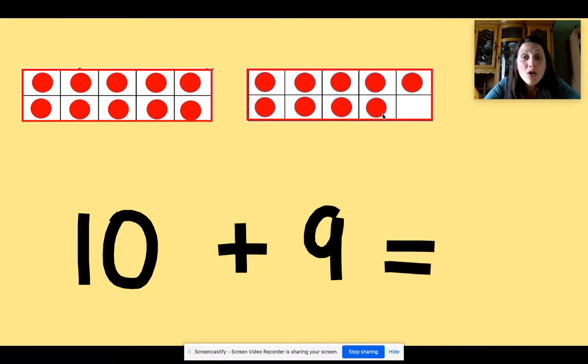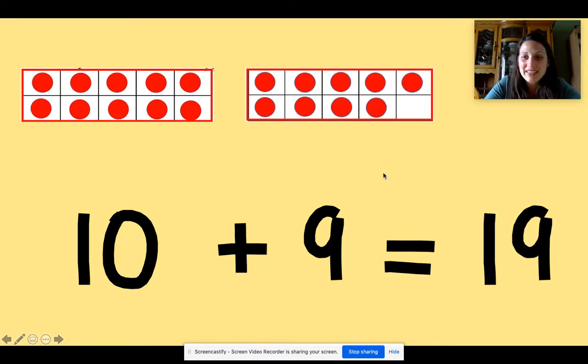It's nine. There are nine counters in my second tens frame. And when I put all those counters together, what number do I get? This group plus this group. Well, if you're not sure, we can count. So I'm going to start with this counter because I know that there's 10 in my first tens frame and I'm going to count on 11, 12, 13, 14, 15, 16, 17, 18, 19. I have 19 counters all together.